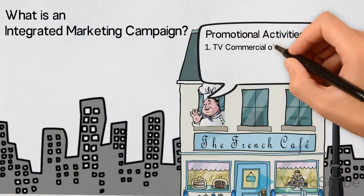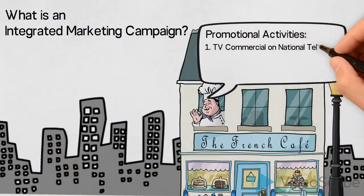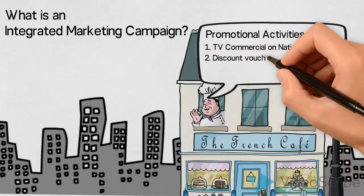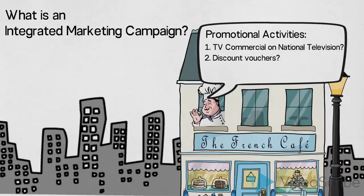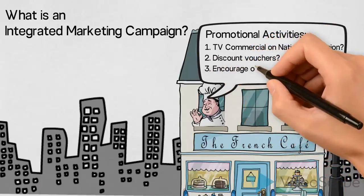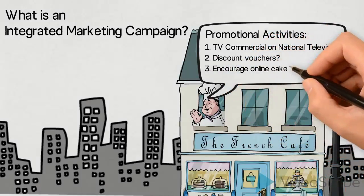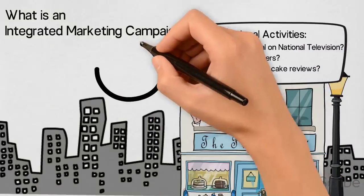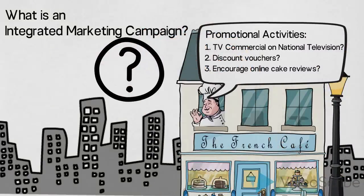Firstly, he thinks that a TV commercial on national television would be great. Secondly, he wants to give discount vouchers to customers when they pay their bill. Thirdly, he would like to encourage customers to review their cakes online. As marketers, we know that before being able to give him any feedback or suggestions for an integrated marketing campaign, we would want to find out some more details.